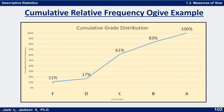Sometimes we would have a zero down here with another line going up to the first point, but there's nothing below an F really. So we have 11% here. The 17% means that 17% of the people made a D or lower. 61% means 61% made a C or lower. 83% made a B or lower, and 100% made an A or lower. So that's an ogive — a cumulative relative frequency broken line graph.